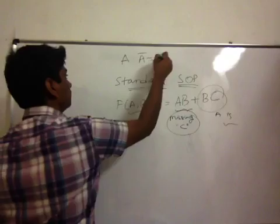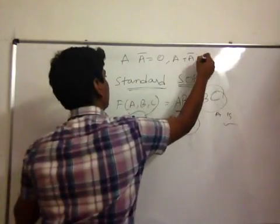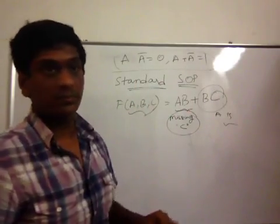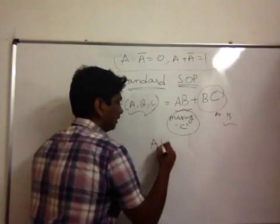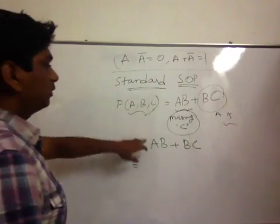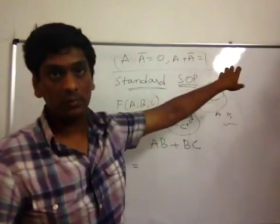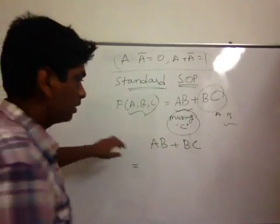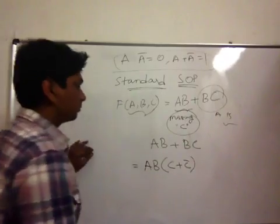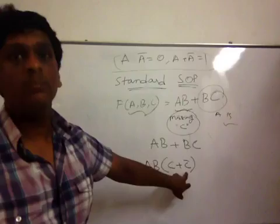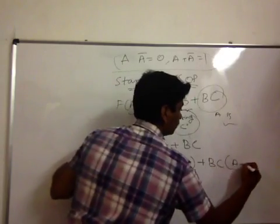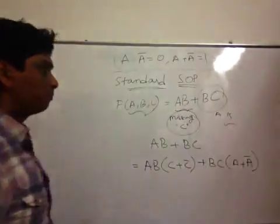So, using those postulates I just mentioned right now. That is, A into A complement is 0 and A plus A complement is 1. Using these postulates, you can bring these into standard form. I am rewriting AB plus BC. We know that A plus A complement is 1. Here, C variable is missing. So, I can write it as AB into C plus C complement. C plus C complement value is 1. AB into 1 doesn't make any difference. And here, I can write plus BC into A plus A complement.